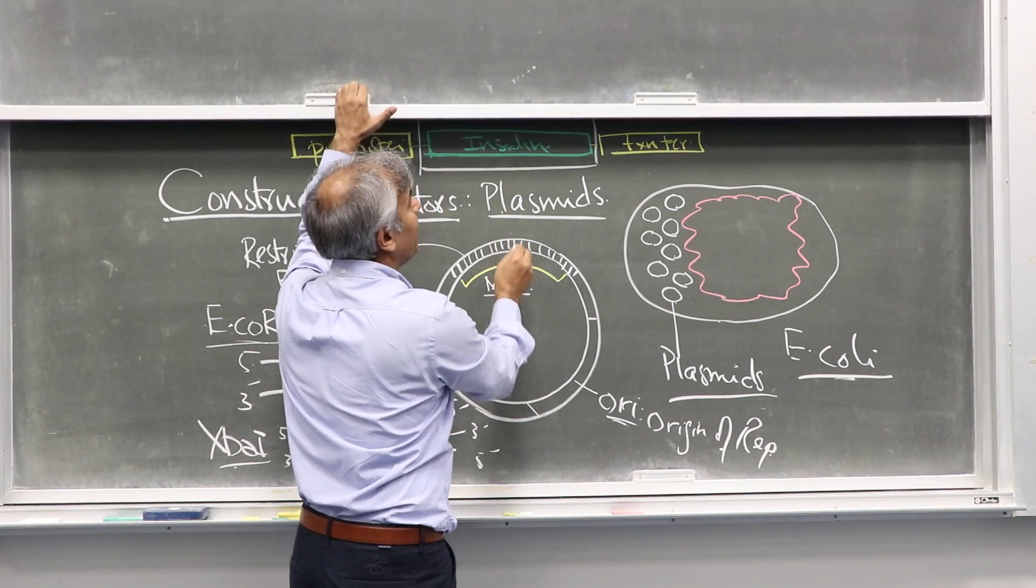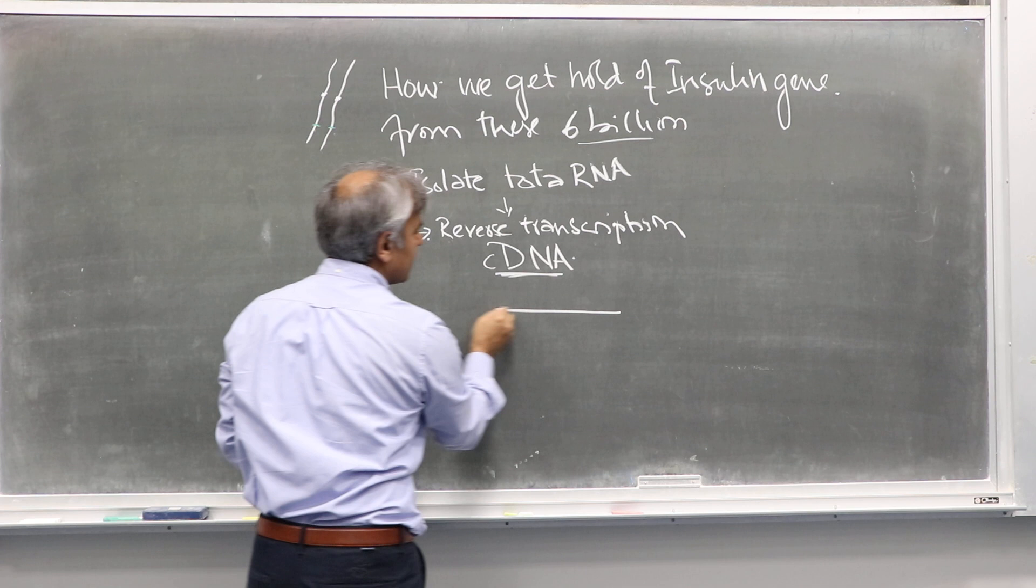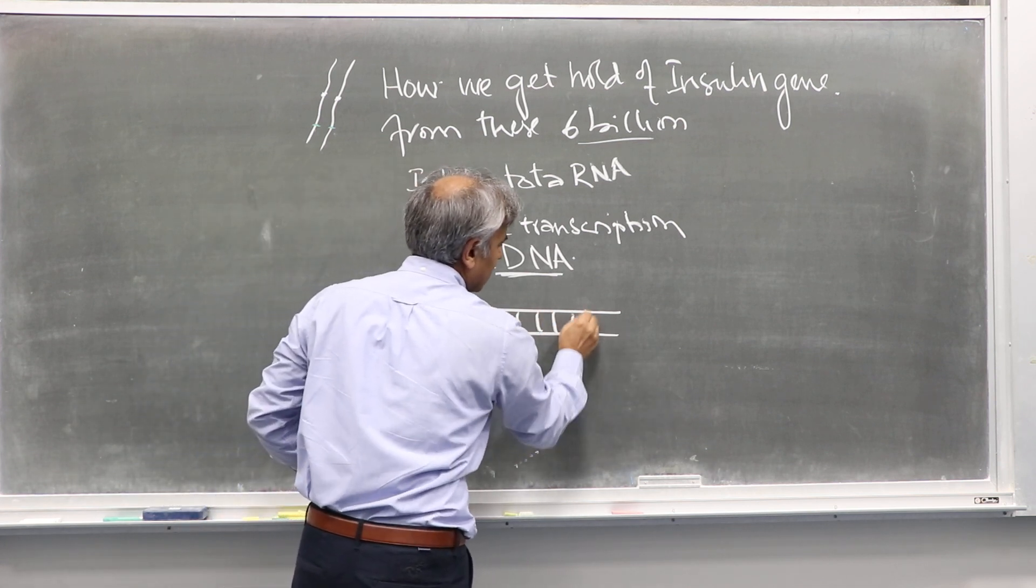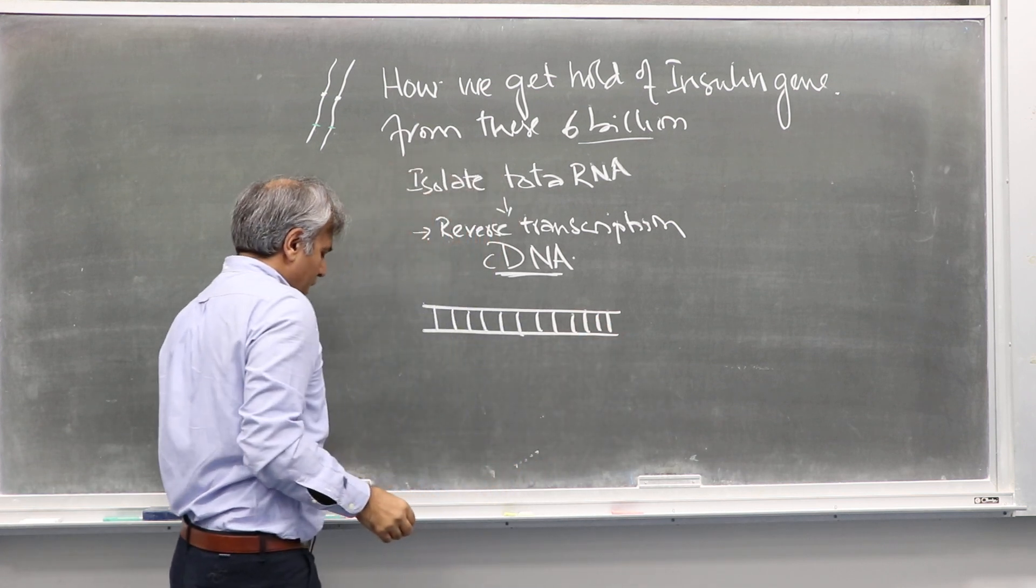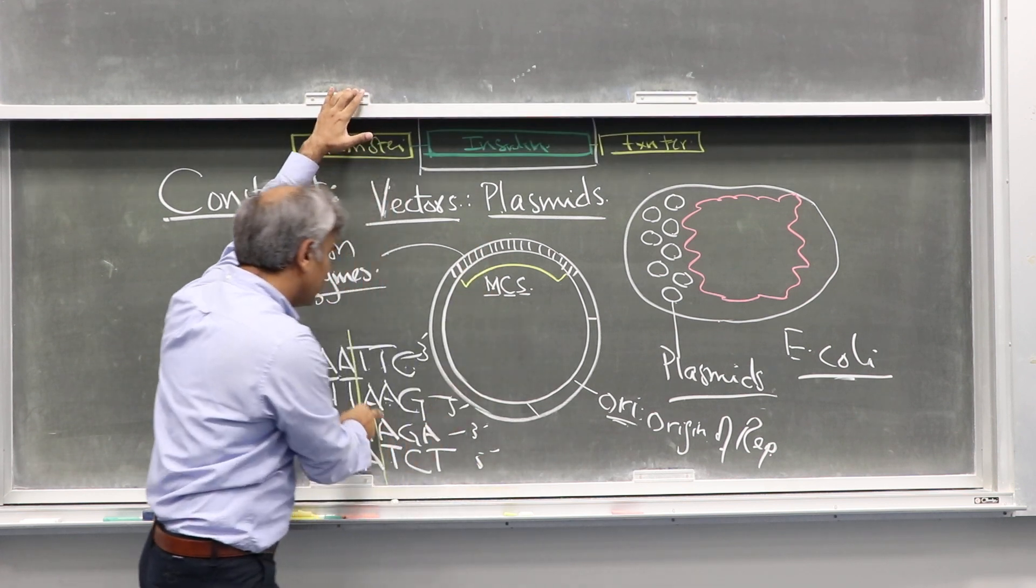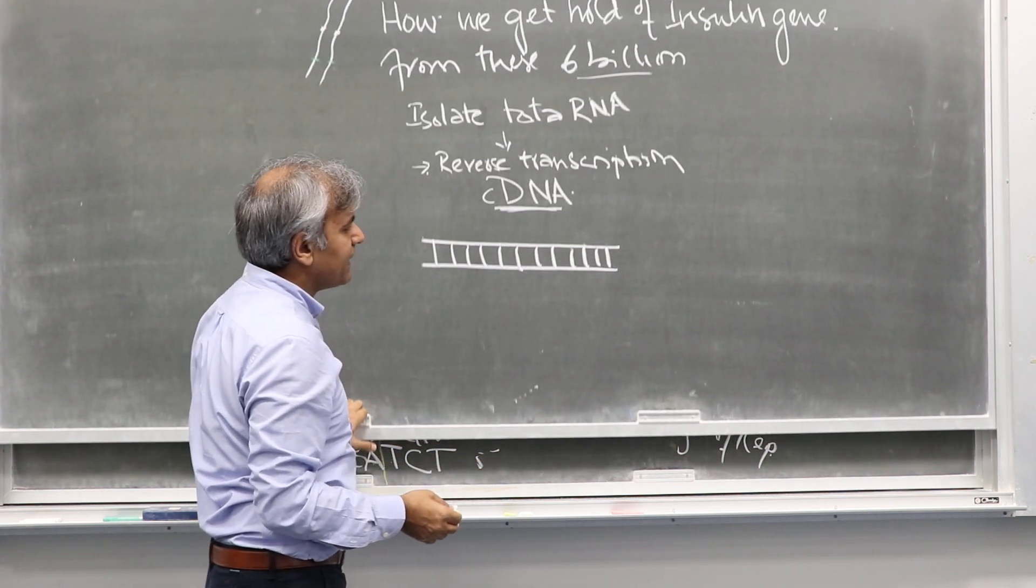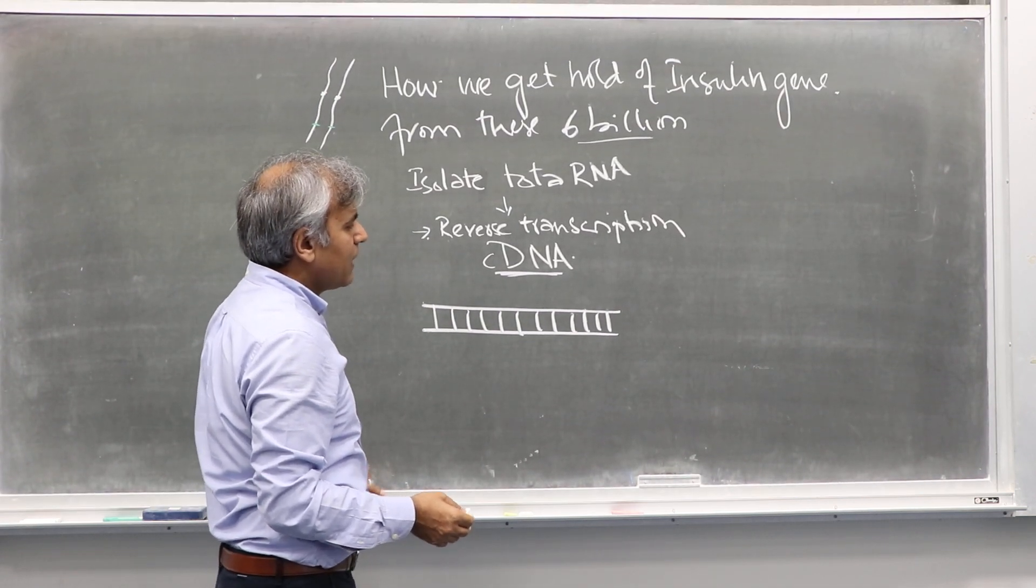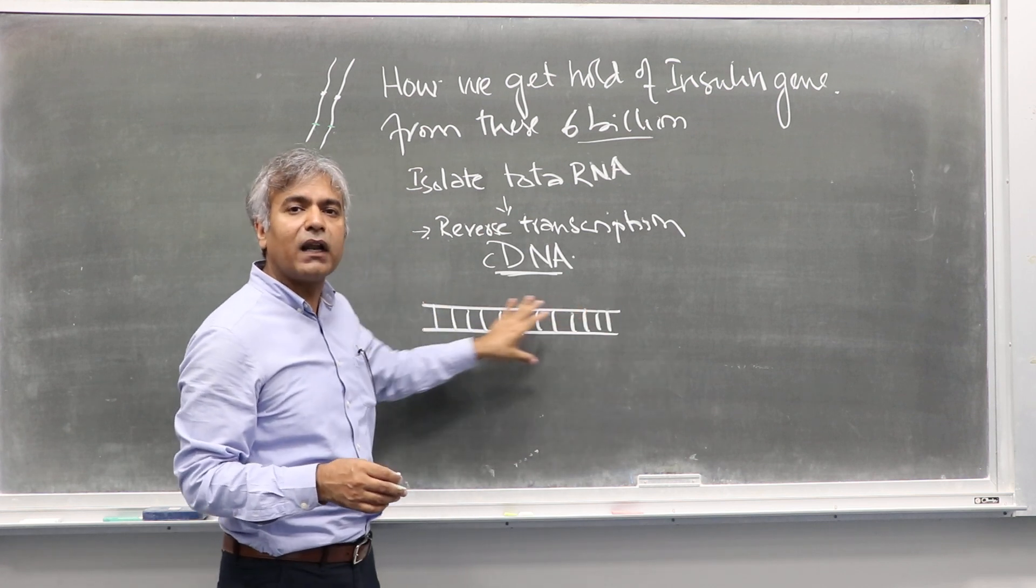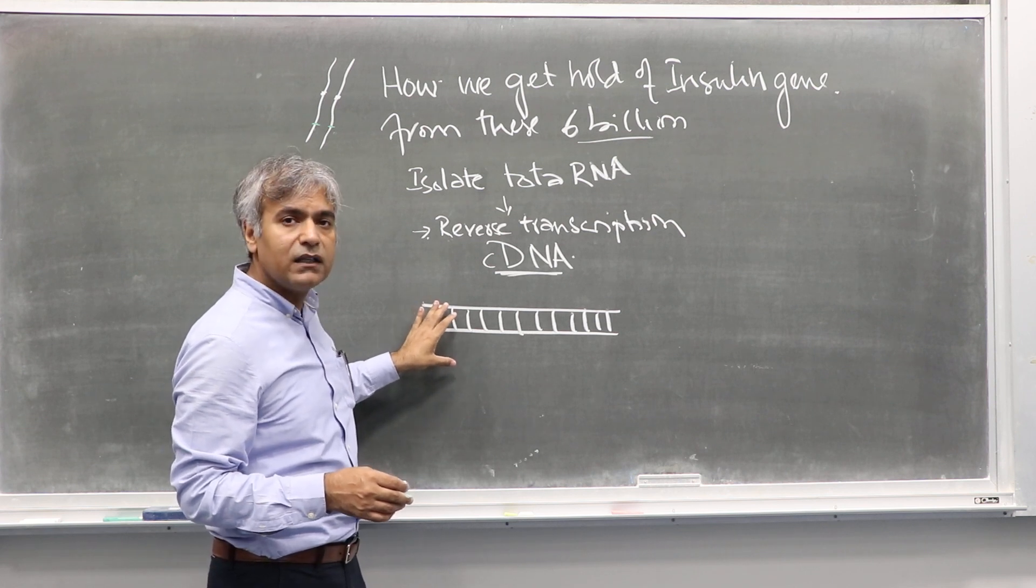Let's say we have this cDNA for insulin. Whichever restriction enzymes we decide—let's say we decide EcoRI and XbaI—whichever restriction enzyme we decide, we will not be lucky enough to ensure that EcoRI and XbaI are not present within this cassette or this insert.